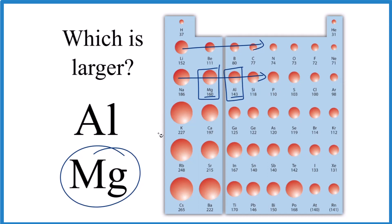That's it. This is Dr. B comparing aluminum and magnesium. Magnesium has a larger atomic radius. Thanks for watching.